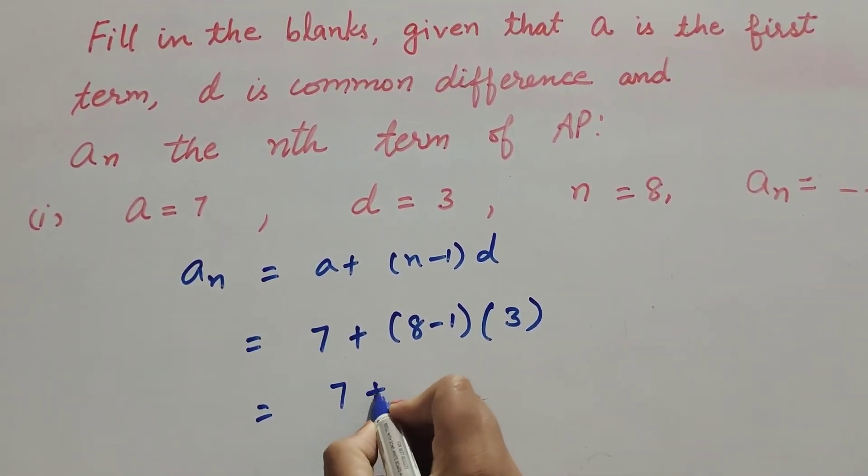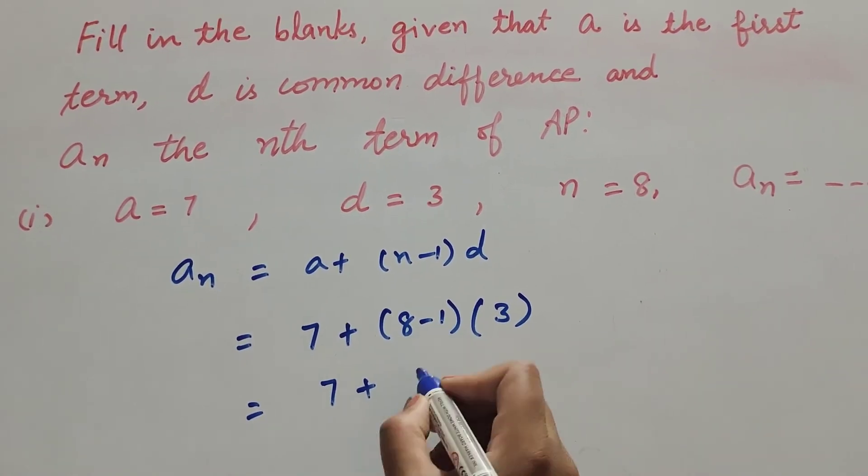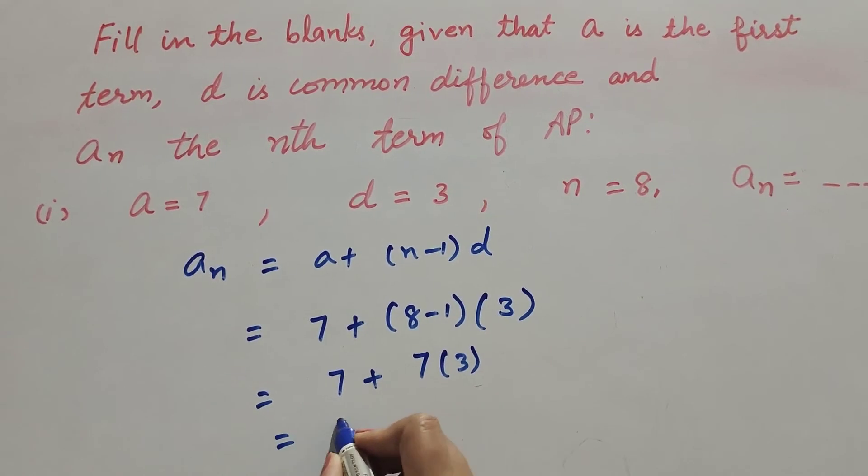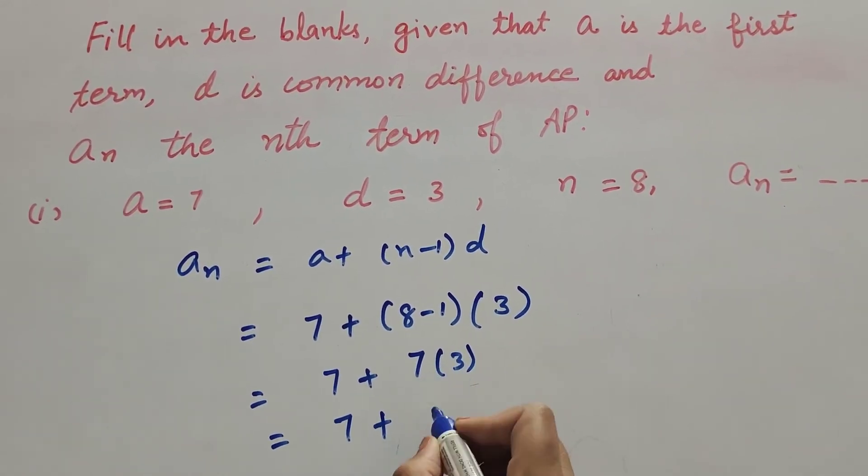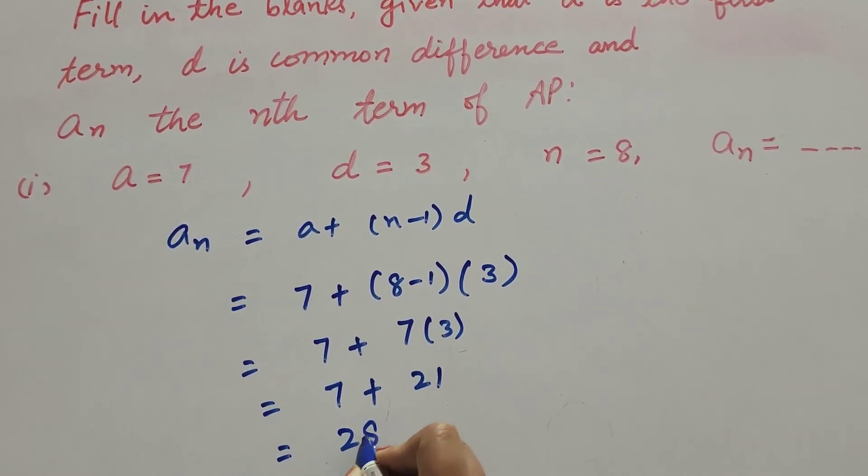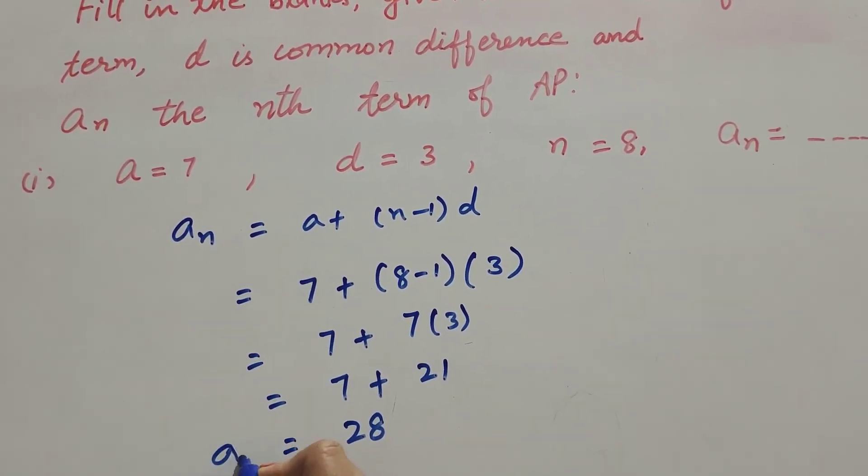It is equal to 7 plus (8 minus 1)(3), it is equal to 7 plus 7 multiply by 3, it is equal to 21, and 7 plus 21 it is equal to 28. So the nth term of the given AP is 28.